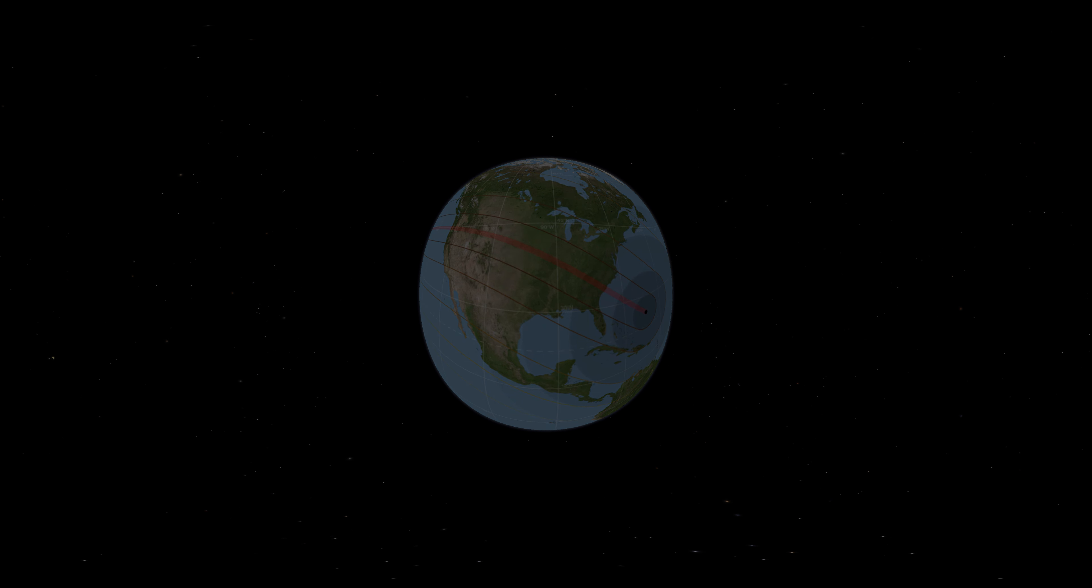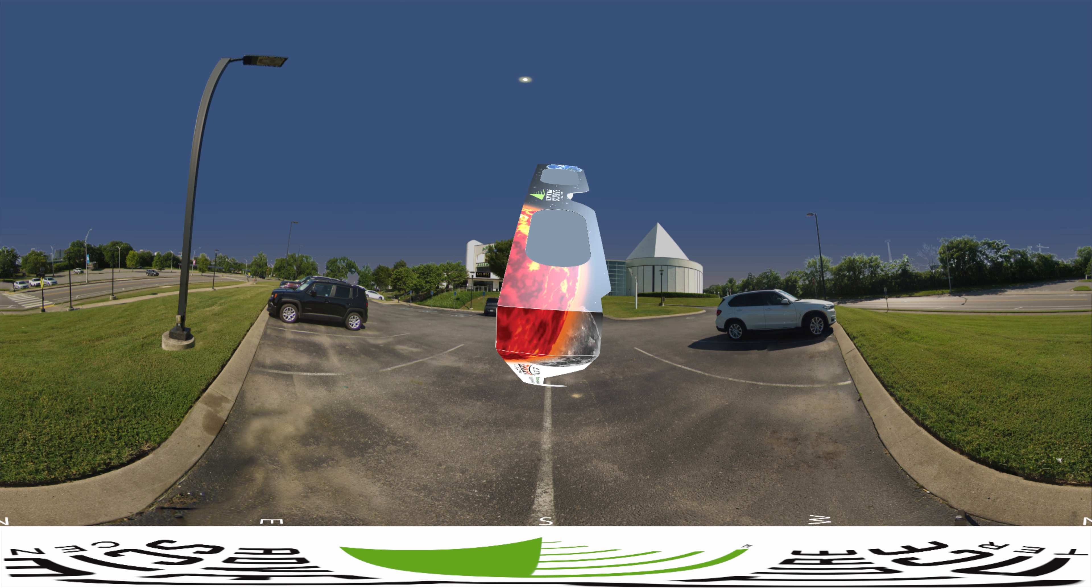You should never look at the sun without special protection. Sunglasses or other homebrew methods are not safe for direct solar viewing. But solar eclipse glasses reduce the brightness of the sun by over 99% and make it safe to look at as you wait for totality.